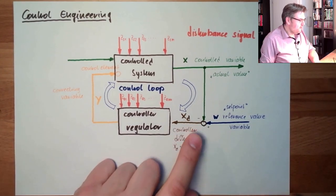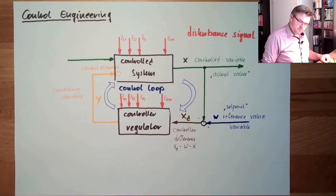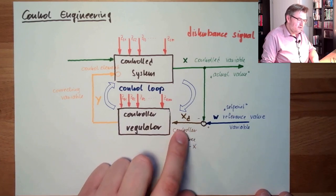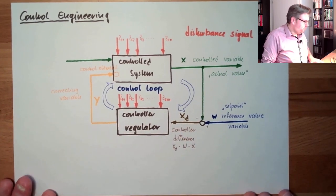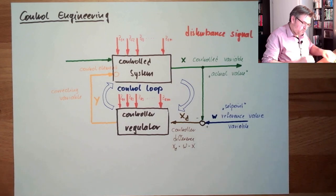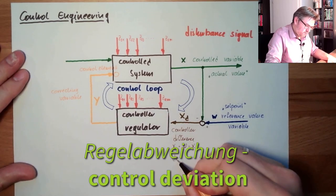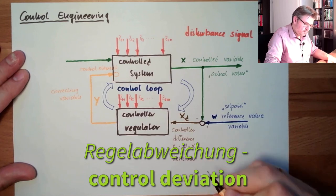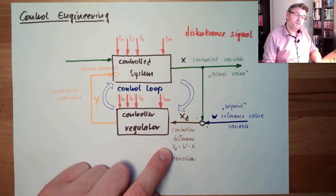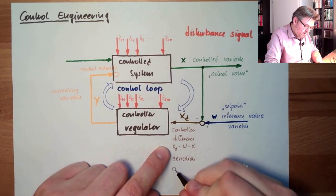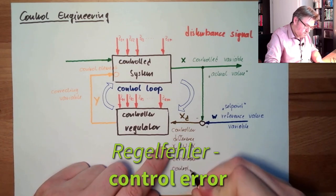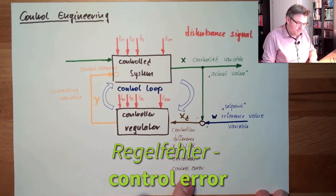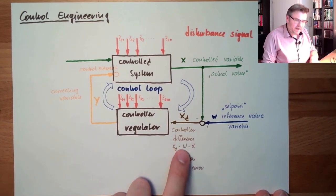The comparator produces what is called the controller deviation — also called control deviation. There is also the term control error. The control error is exactly the opposite of the control deviation, so the control error is x minus w.